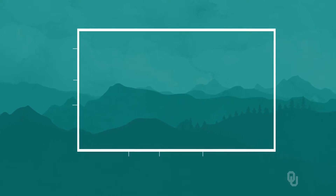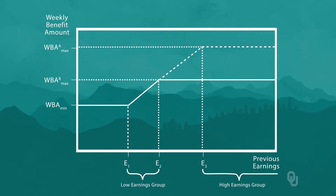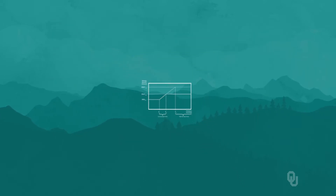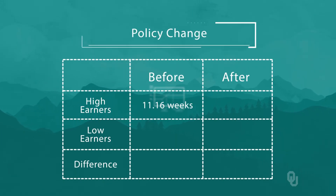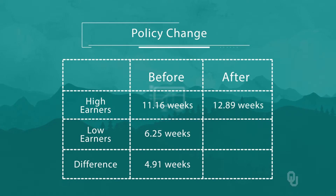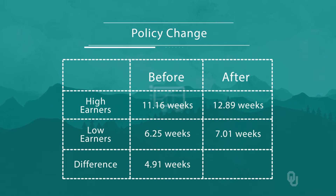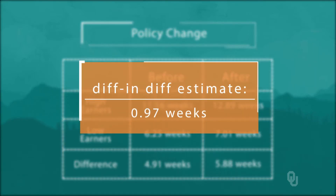Their low earner group are the workers whose benefits are unchanged by the policy, while their high earner group are those whose benefits used to be capped but are now increased. Before the policy change, the average duration of workman's comp claims was 11.16 weeks for high earners and 6.25 weeks for low earners — a difference of 4.91. After the change, the average durations were 12.89 weeks for high earners and 7.01 weeks for low earners, a difference of 5.88 weeks. Subtract the first difference from the second and our diff and diff estimate of the effect of the policy is 0.97 weeks.